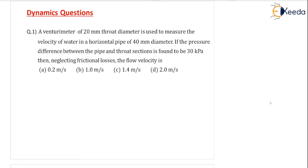As per the given question, a venturi meter of 20 mm throat diameter (that must be converted into meters) is used to measure the velocity of water in a horizontal pipe of 40 mm diameter. If the pressure difference between the pipe and the throat section is found to be 30 kPa, then neglecting frictional losses,